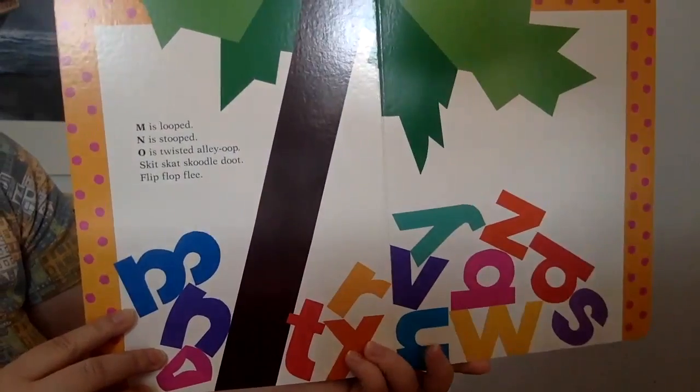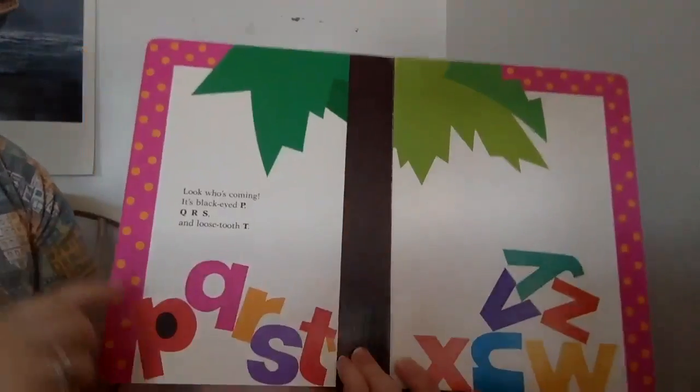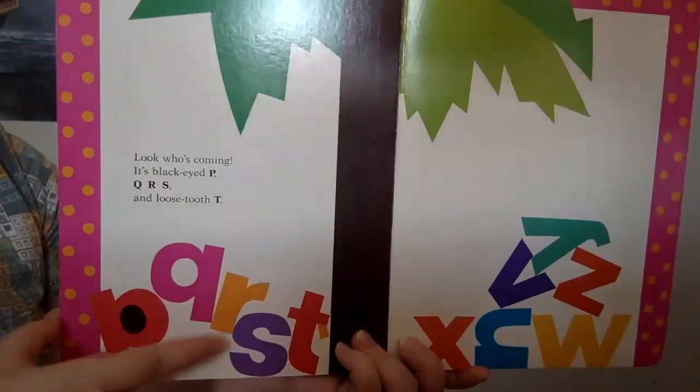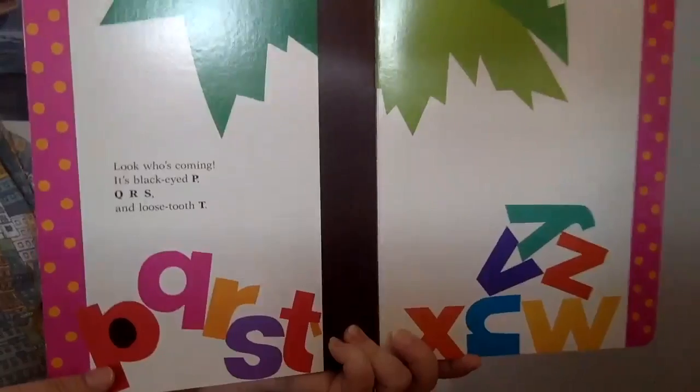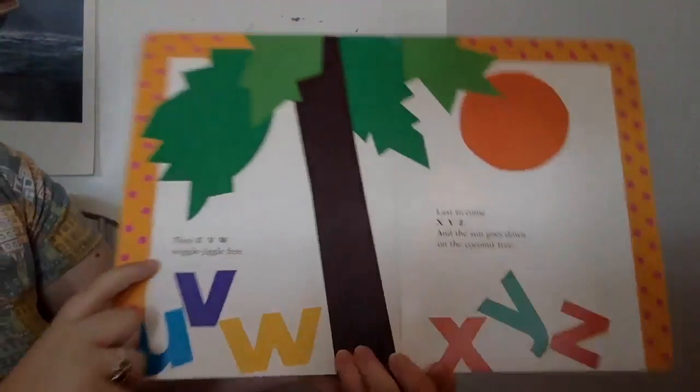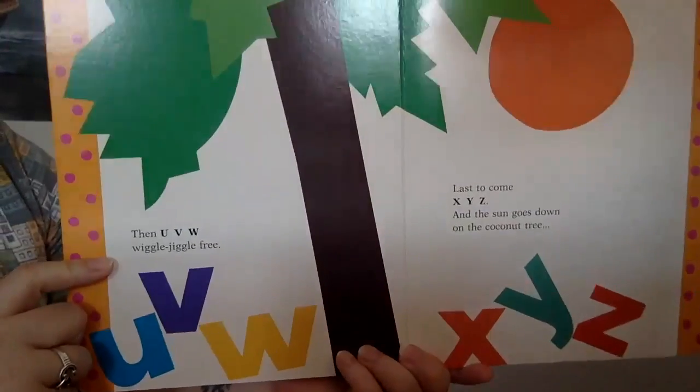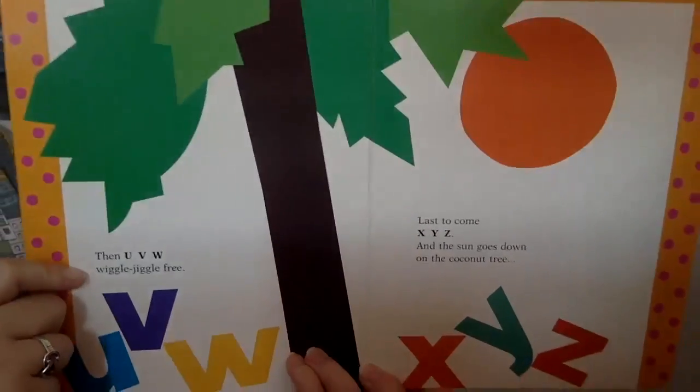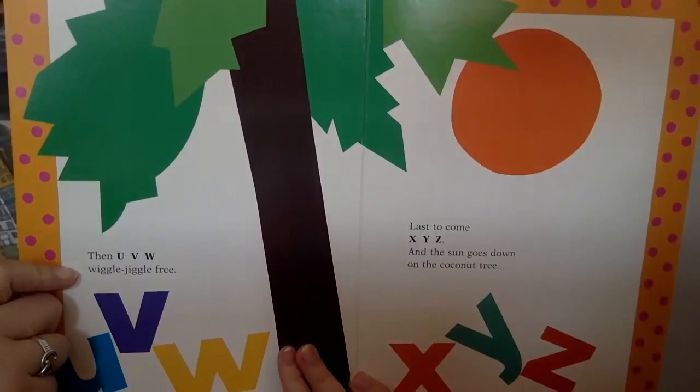Skit-skat, scoodle-doot, flip-flop, flee. Look who's coming. It's black-eyed P-Q-R-S and loose-tooth T. Then U-V-W, wiggle-jiggle-free. Last to come, X-Y-Z. And the sun goes down on the coconut tree.